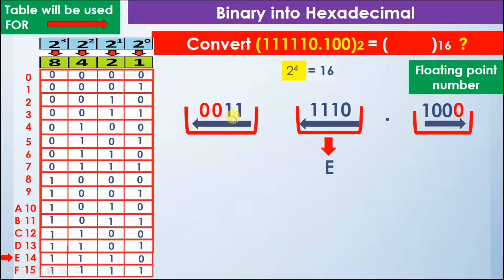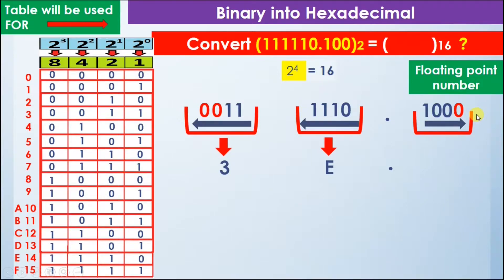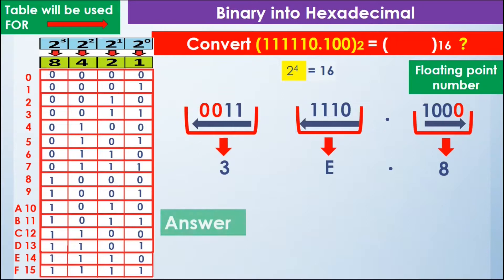Next, we find the value 0 0 1 1 in the table — it is equal to 3, so we write 3 here. The decimal point maintains its position. Then we take the binary value 1 0 0 0 and find it in the table — it is equal to the hexadecimal digit 8, so we write 8 here.